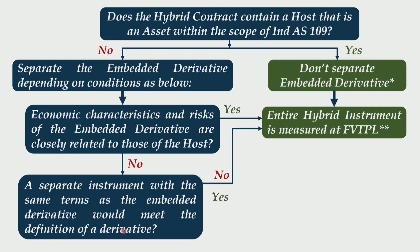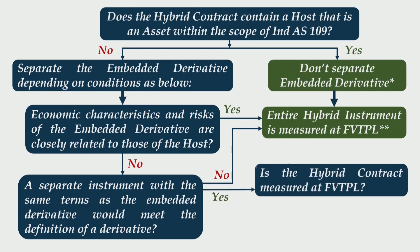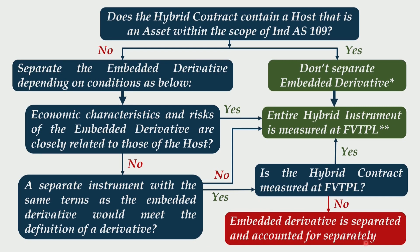Even if the answer to condition B is yes, you do not separate it directly because there is yet another condition: is the hybrid contract measured at FVTPL? The whole idea is if you want to put the entire hybrid contract at FVTPL, then there is no sense separating the embedded derivative from the host contract, because either way both will be measured at FVTPL. So if the answer to this question is yes, simply do not try to separate the embedded derivative — the entire hybrid instrument is measured at FVTPL. However, if the answer is no, then and only then you will separate the embedded derivative from its host contract and account for it separately.